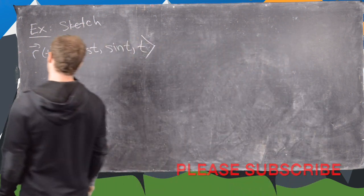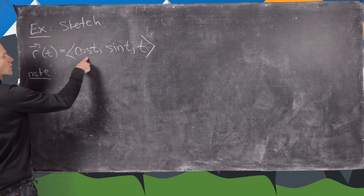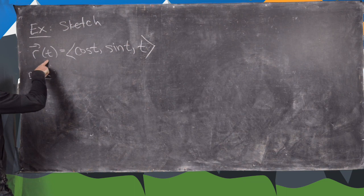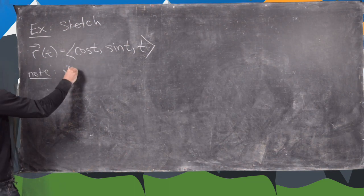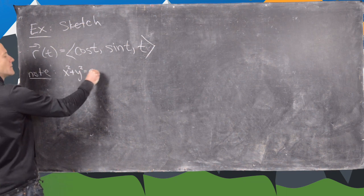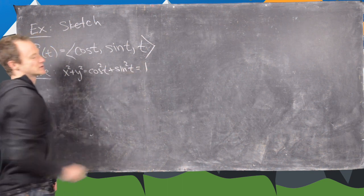And maybe the first thing to notice here is that the x-coordinate of this vector-valued function and the y-coordinate of this vector-valued function, if you take them and square them, we get cosine squared t plus sine squared t, which equals 1.